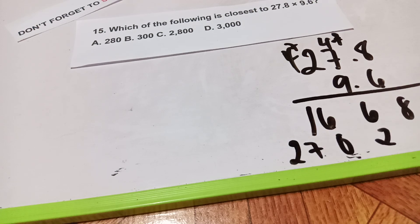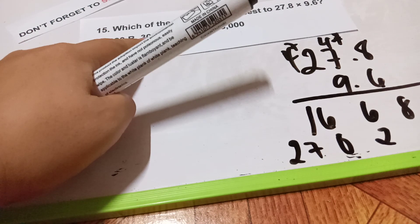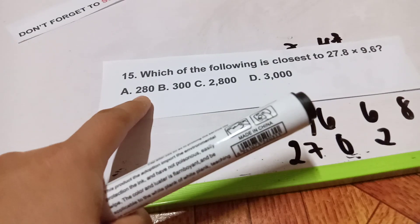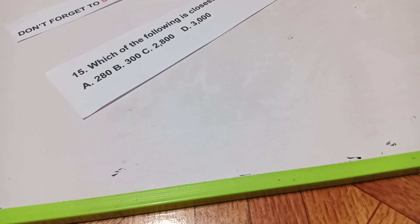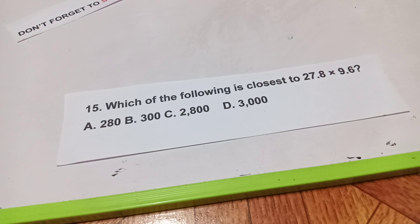If you're in an engineering or math board exam, just press it on your calculator: 27.8 times 9.6. The answer is 266.88. The answer is letter A, which is 266.88. Thank you very much guys — we will proceed to our next video.